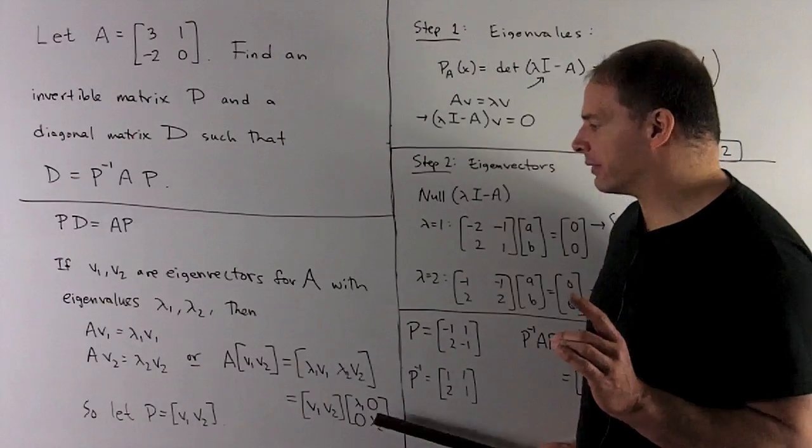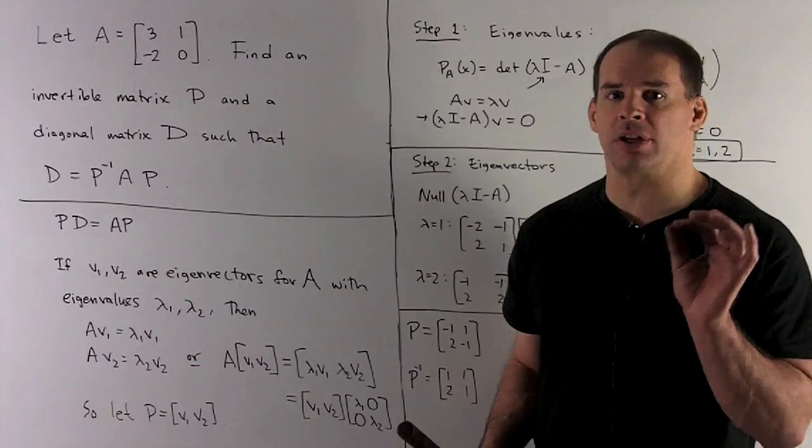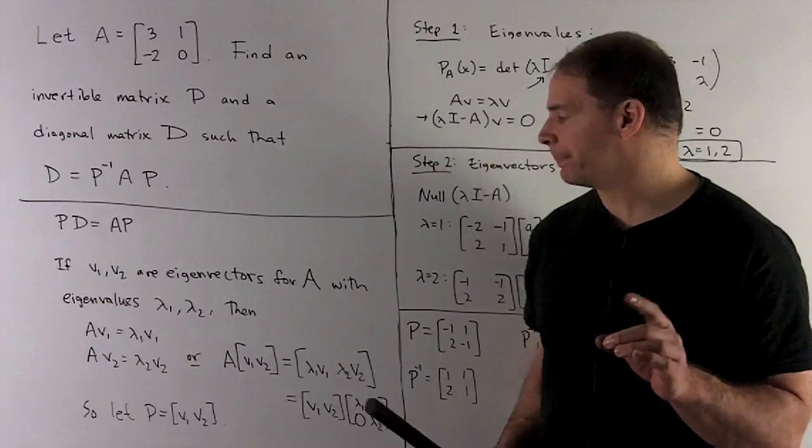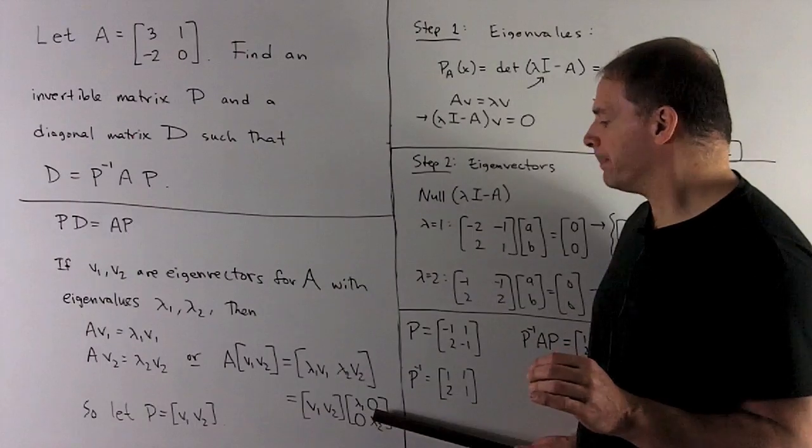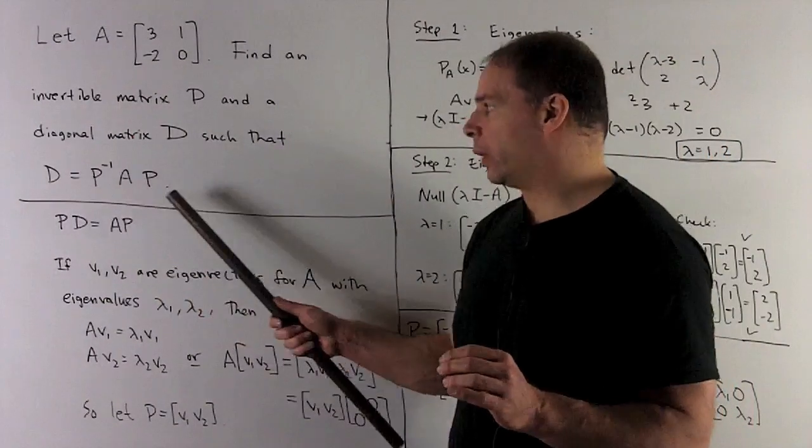Now, what do I have? I have A. We'll call this matrix P now. So P is going to be the matrix which has as its columns our eigenvectors. So I have A times P equals P times D. If I multiply both sides by P inverse, I get back our equation here.